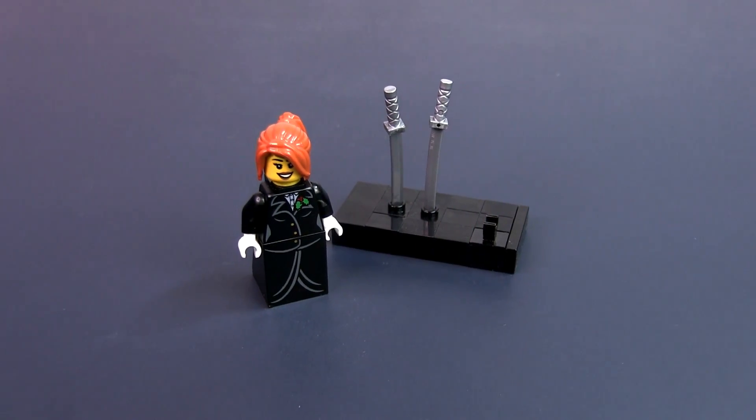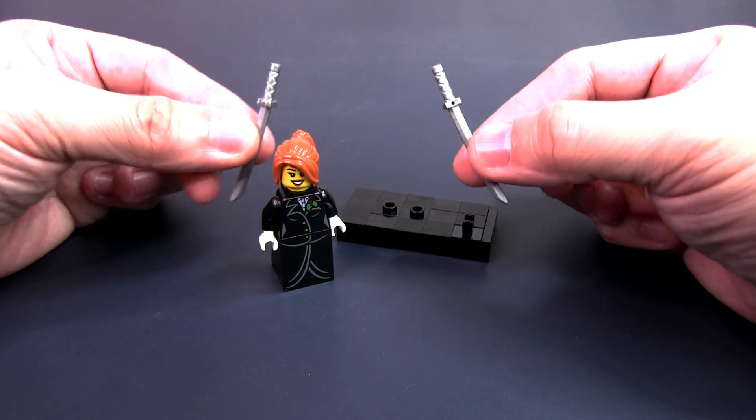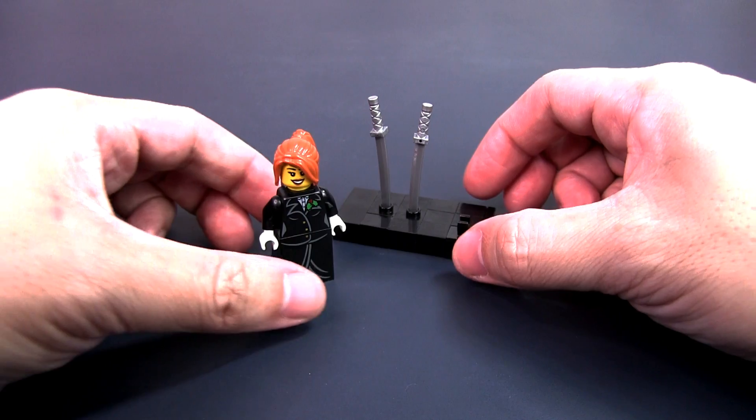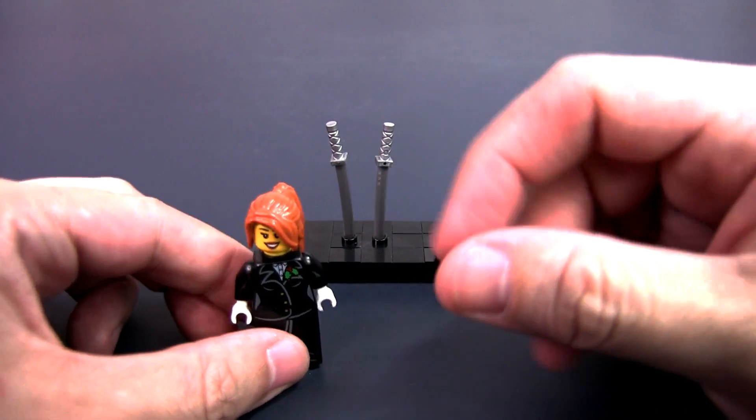Over here, we have a little platform and two katana swords donated by Master Wu. We'll place the katanas into the base. And now we need to put Nikki into a hypnotic sleep. Perfect.